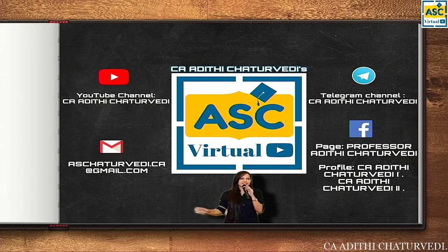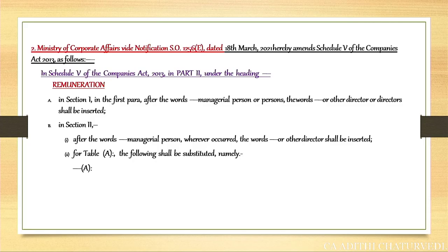Before winding up, something very important: there were certain amendments given for the previous December 2021 attempt which were not asked in that attempt. Be very alert with respect to December 2021 amendments — they can appear in your attempt this time. Ensure you go back and read those amendments. They were given in the previous RTP as well. I can share the PowerPoint slides if needed.